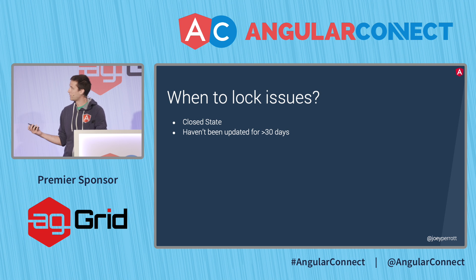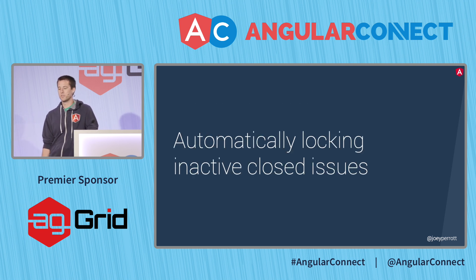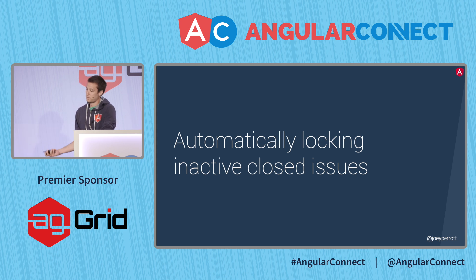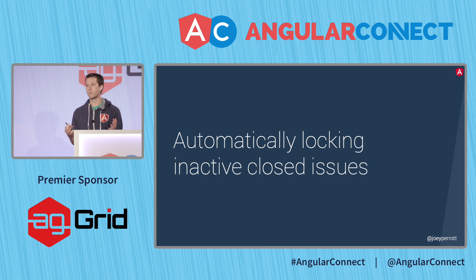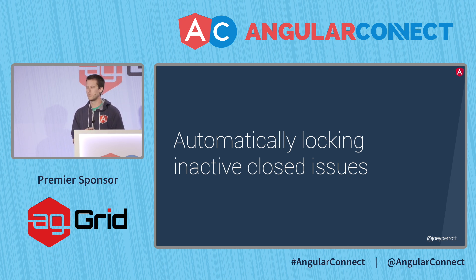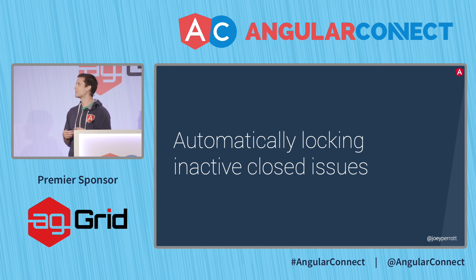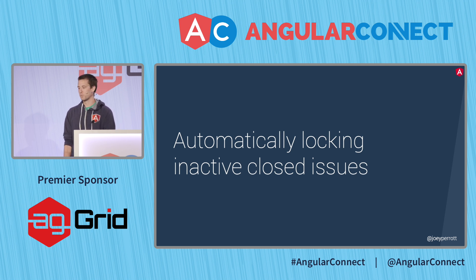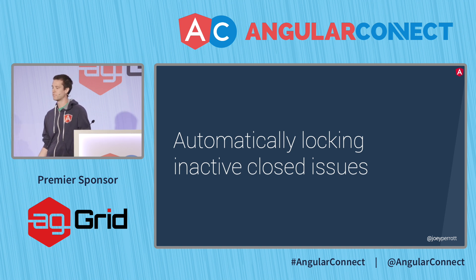Now that we know our criteria, we actually have to discover what those issues are so that we can automatically lock them. We looked at what our options were, and there are a few different examples of set-ups that have already been doing this. Nothing quite fit what we were looking for, and we had also been looking for a reason to test out GitHub Actions, so we chose to use GitHub Actions for this.